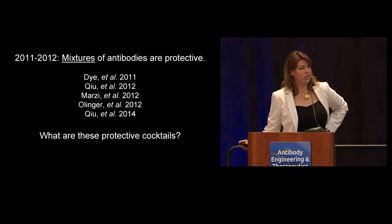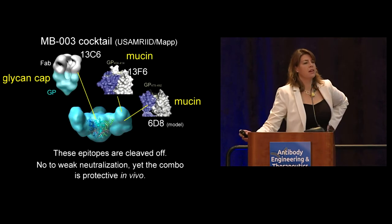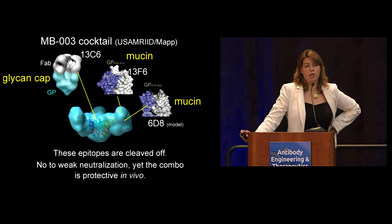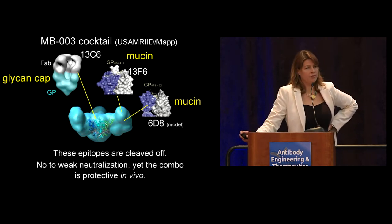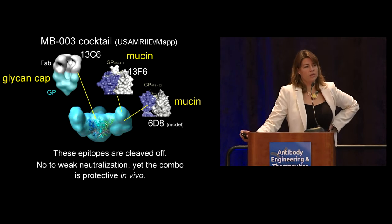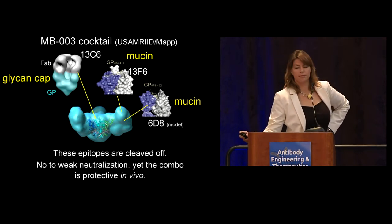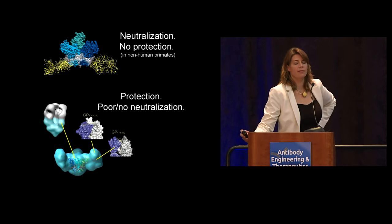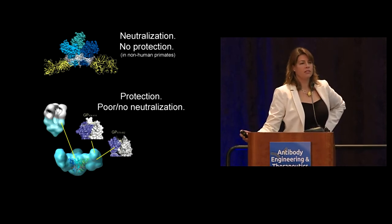What are these cocktails that do protect non-human primates? The first one we looked at is MB003, raised by USAMRIID — three monoclonals. These antibodies are directed against a linear epitope in the mucin domain, another linear epitope in the mucin domain, and the glycan cap — the parts of the glycoprotein that are cut off once it gets into the endosome. They don't neutralize at all for the two mucin ones, or very well for the glycan cap in vitro. But put the three together, and they were protective in non-human primates. That was a puzzle: we had KZ52 with potent neutralization but no protection in non-human primates, and MB003 giving protection in the absence of any decent neutralization.